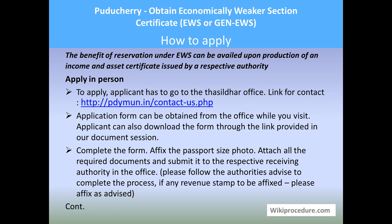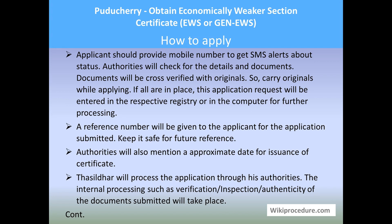You can obtain the application form directly from the office; if required, you may need to pay for it. Otherwise, you can use the download link shown previously to download the application form. Complete the application form, affix the passport size photograph, attach all required documents, and submit to the respective receiving authority in the office. Please follow the authority's advice to complete the process. If required, you have to affix a revenue stamp as per the authority's advice. The applicant should provide a valid mobile number to receive SMS updates about the latest status of the application.